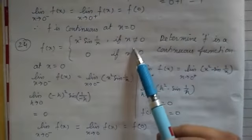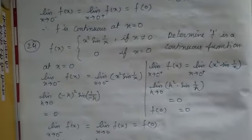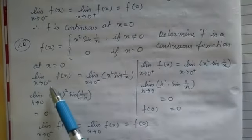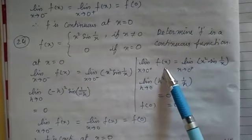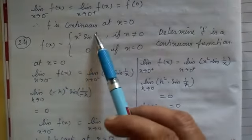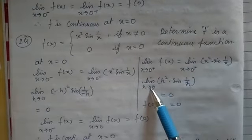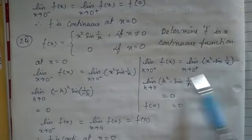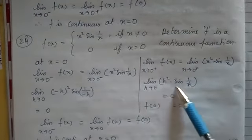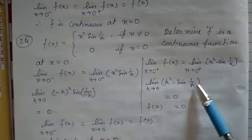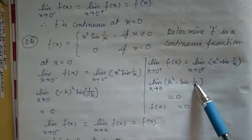Similarly, for the right-hand limit, since x ≠ 0 includes both less than and greater than, we take h tends to 0⁺. With h positive, f(x) = h²·sin(1/h). Now putting h = 0: 0² times whatever comes after — no need to worry about 1/0 being undefined, because 0 squared is 0, and 0 multiplied by any number is 0. So the right-hand limit is also 0.